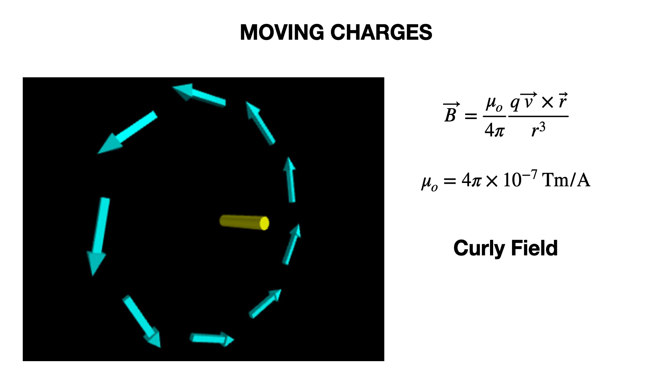And also we have this magnetic constant that comes into play a little bit later. That's just in there to calculate the magnetic field, just like we have the electric constant to calculate the value of the electric field due to a charge. So moving charges make curly magnetic fields, stationary charges make Coulomb electric fields.